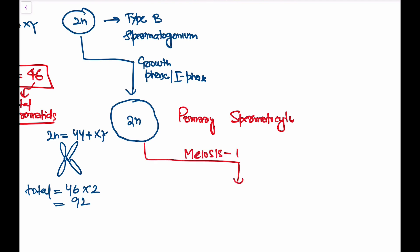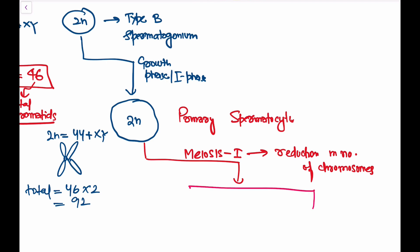In Meiosis I there is a reduction in the number of chromosomes — nothing happens to the number of chromatids. Half the chromosomes go to one cell and half to the other, so we now get two cells, each with n chromosomes.